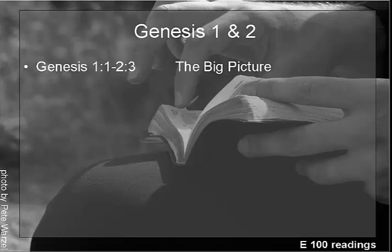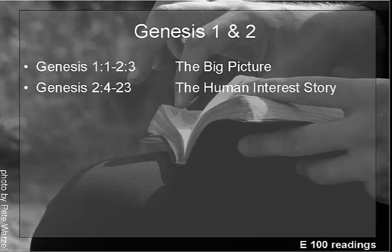The book calls these two 'the big picture' — that's chapter one up to verse three or so of chapter two — and 'the human interest story.' Those are quite good titles for them, because chapter one does give us the big picture: majestic, glorious. And chapter two does give us a very human-interest story.